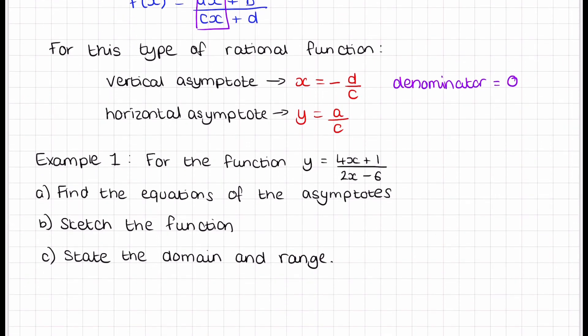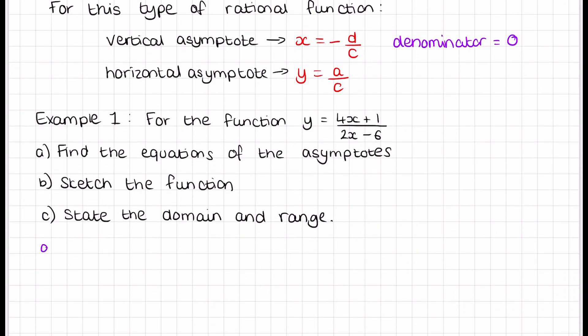Example here: for the function 4x plus 1 over 2x minus 6, find the equations of the asymptotes. For our vertical, easiest way I find to do this is make the denominator equal 0. So 2x minus 6 equals 0, rearrange that, 2x equals 6, so when x equals 3 there's our vertical asymptote. Remember we have to write it as x equals. For the horizontal, we look at the values in front of the x's which is 4 in the numerator, 2 in the denominator, so our horizontal asymptote will be 4 over 2, so y equals 2.